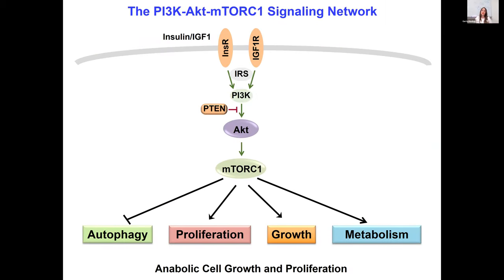Since my PhD and during my postdoctoral period, I've been interested in the PI3 kinase, AKT and TORC1 pathway, which is a pro-growth signaling pathway. Under normal conditions, the PI3 kinase AKT pathway is activated in response to hormones such as insulin as well as growth factors such as IGF-1. Once insulin or IGF-1 bind to the insulin receptor, they lead to activation of the lipid kinase PI3 kinase, and downstream targets such as AKT and then TORC1. These kinases regulate various aspects of metabolism, inhibit autophagy, and support cell growth and proliferation.